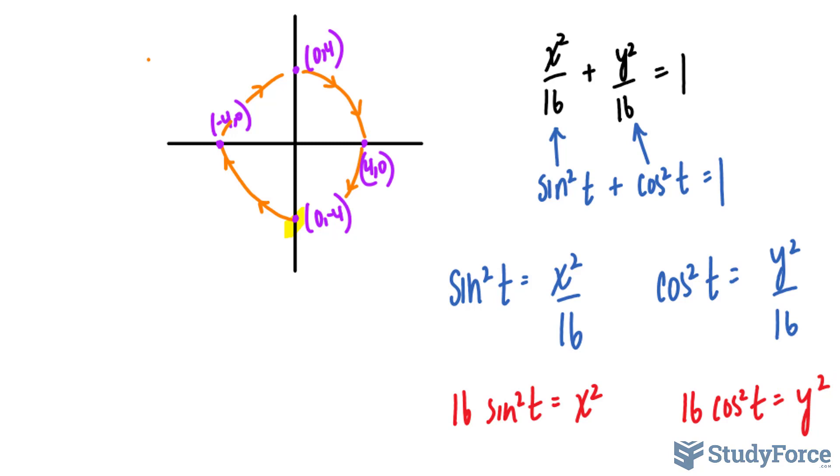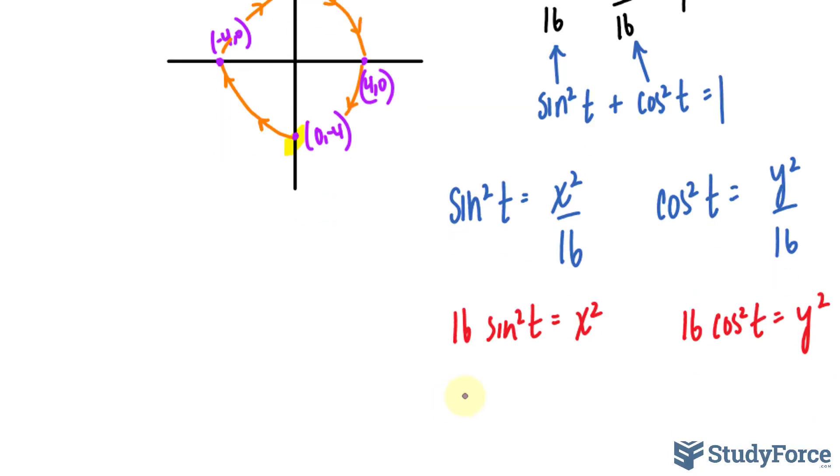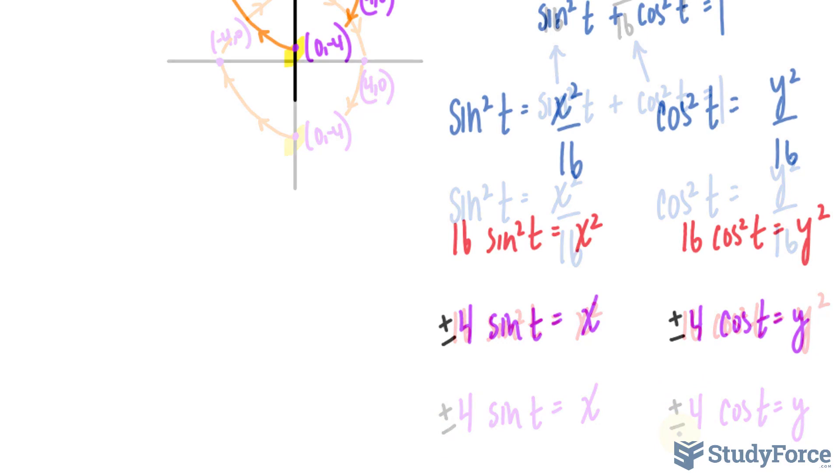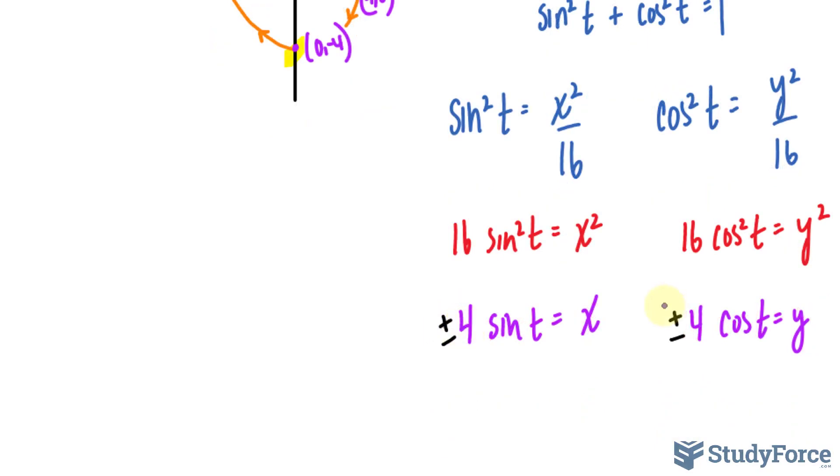I'll square root both sides, and if I square root the left side, I get 4 sine t is equal to x, and on the right side, I get 4 cosine t is equal to y. Now remember, 4 can be plus or minus, because you're square rooting 16, you get plus minus. Now the fact that this is plus minus 4 and plus minus 4, this means that there are four possibilities for parametric equations.